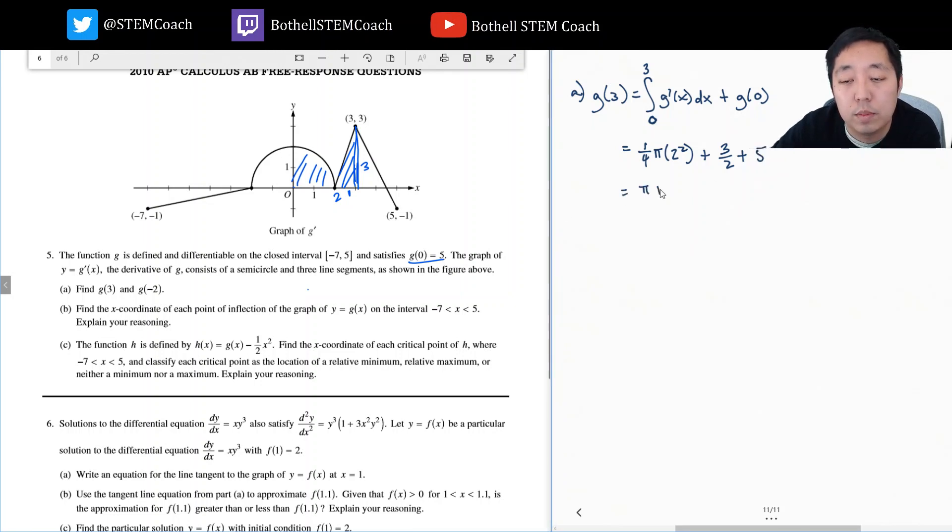And g of zero they gave us is five. So this is pi plus five plus three halves. Five is ten halves, so this is thirteen halves.